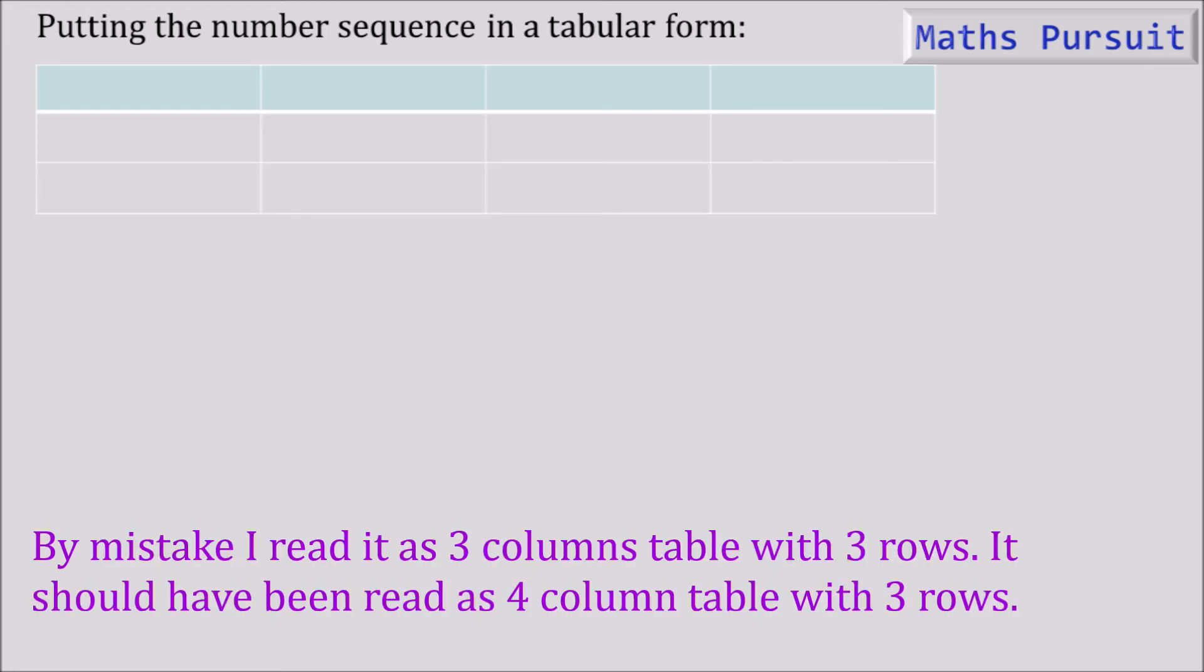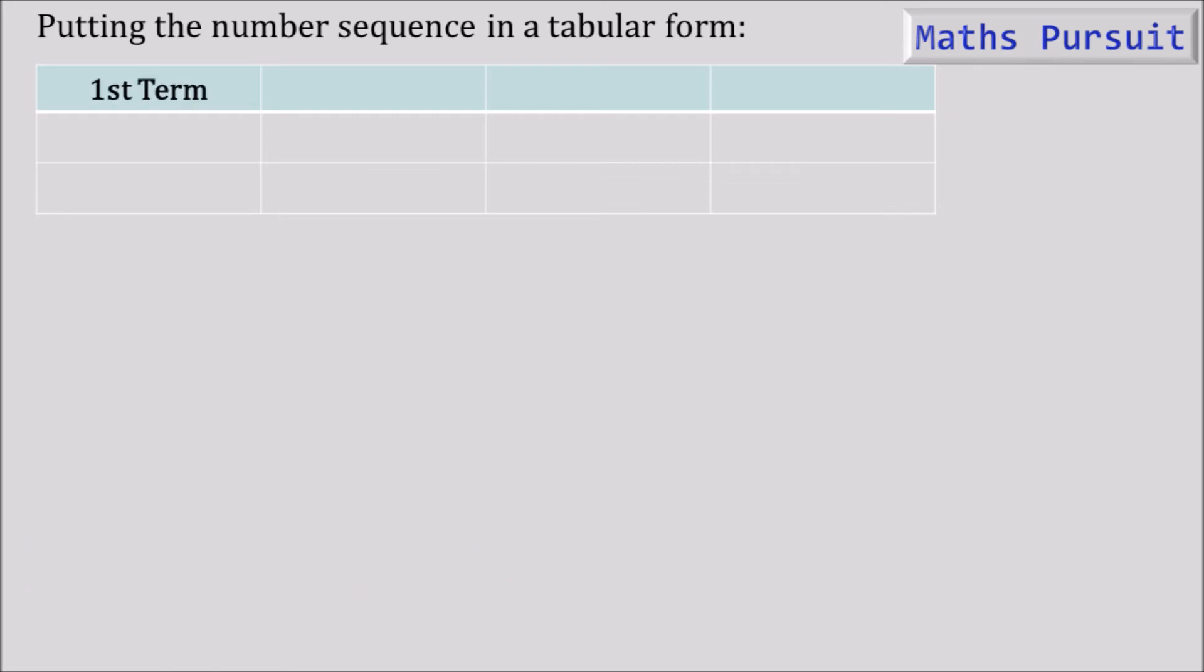We have created a table naming 1st term, 2nd term, 3rd term, 4th term, and putting 150 under 1st term, 200 under 2nd term, 250 under 3rd term, 300 under 4th term, and naming 1st term as a₁, 2nd term as a₂, 3rd term as a₃, 4th term as a₄. We are naming these as a₁, a₂, a₃, a₄ so that it would be easy for us to calculate.